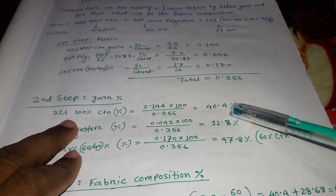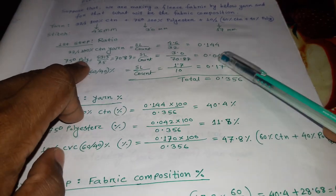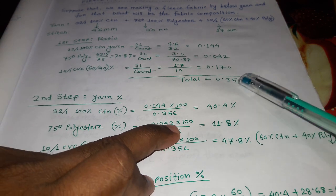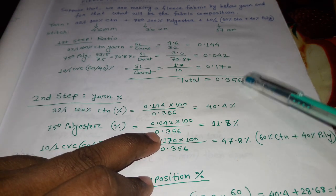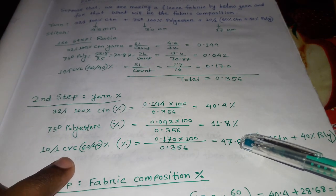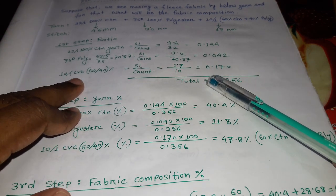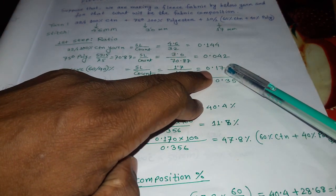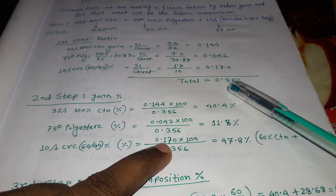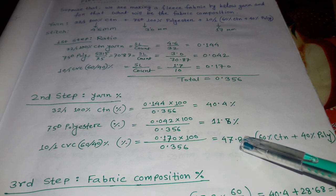So 32 single cotton percentage equals 0.144 × 100 / 0.356 = 40.4%. For 75 denier polyester, the ratio was 0.042, so: 0.042 × 100 / 0.356 = 11.8%. For 10 single CVC 60/40, the ratio was 0.170, so: 0.170 × 100 / 0.356 = 47.8%.